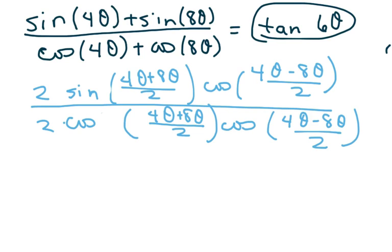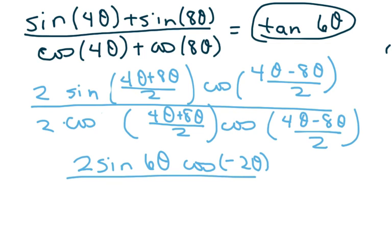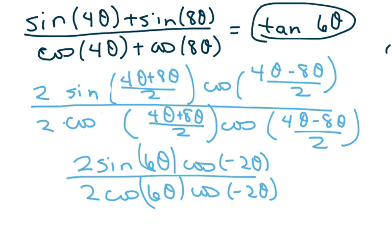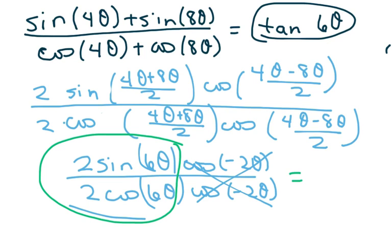This yields 2 sine of 6 theta times cosine of negative 2 theta, over 2 cosine of 6 theta times cosine of negative 2 theta. The cosine of negative 2 theta terms cancel, and clearly this equals tan of 6 theta. So it matches.